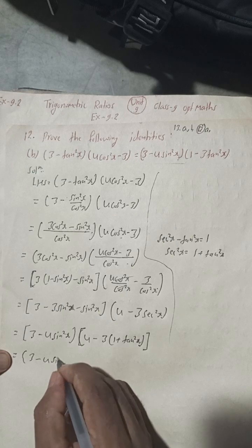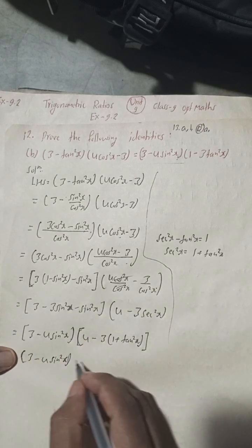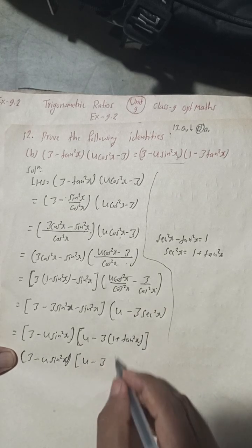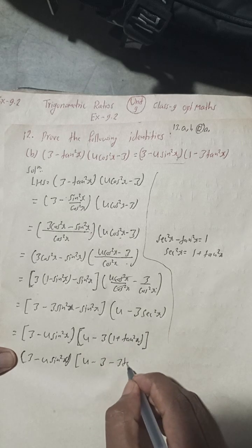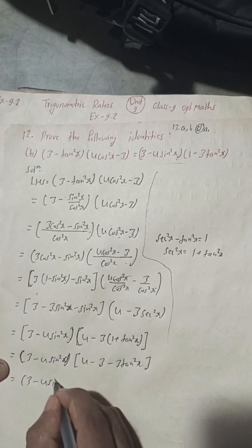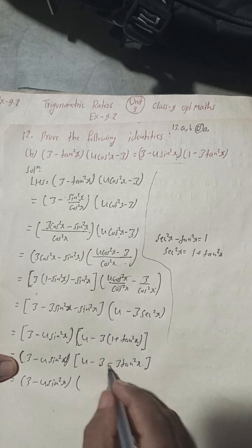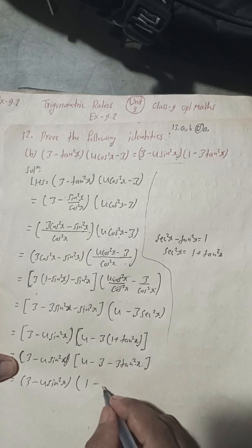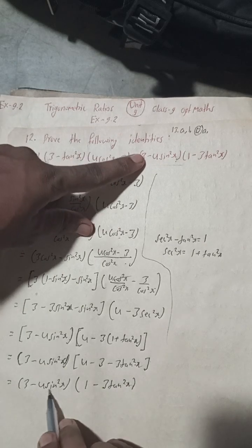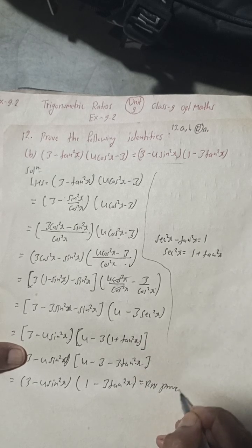We have (3 - 4sin²x) as it is. Expanding the bracket: 4 minus 3 gives 1, and minus 3tan²x remains, giving us (1 - 3tan²x). Therefore we get (3 - 4sin²x)(1 - 3tan²x), which is our RHS. Proved.